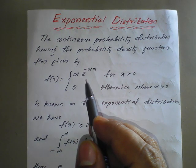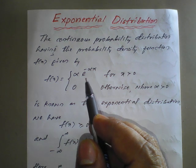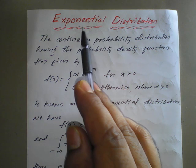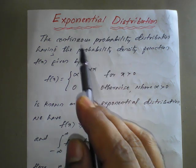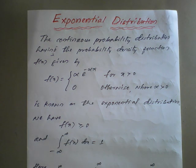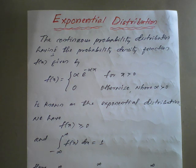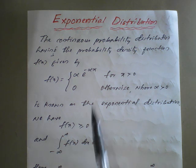Good morning, dear students. In today's class we'll see the next distribution — exponential. In the previous classes we have seen binomial distribution and Poisson distribution. Now the next is exponential. As we have seen in the beginning, the given distributions are divided into two parts: discrete random distribution and continuous distribution. Under discrete: binomial and Poisson. Under continuous: exponential distribution and normal distribution.